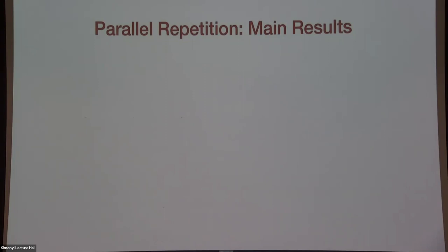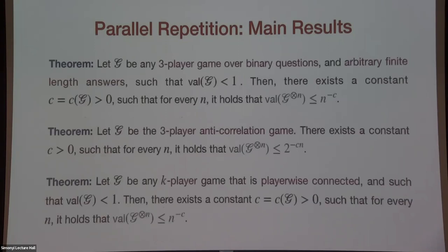Our main results are three theorems. The first theorem is for any three-player game where the questions to all players are binary — like in the anti-correlation game where each player gets zero or one — but with arbitrary-length answers. If value(G) < 1, then the value of G^n decreases as n^{-C} for some constant C. This is already a vast improvement over 1/α(n).